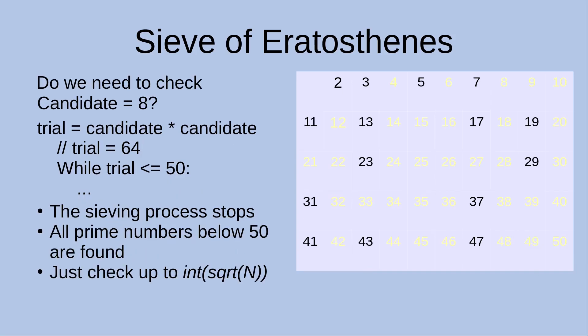Do we really need to check when the candidate is equal to 8? Actually no — when the candidate is 8, the trial number becomes 64, which is already larger than 50. So the sieving process is not necessary when the candidate becomes 8. We are sure that all prime numbers below 50 are found. We only need to check up to the integer part of the square root of n — for n=50, that is 7. All prime numbers are now shown in black, and those in yellow have been deleted during the previous steps.